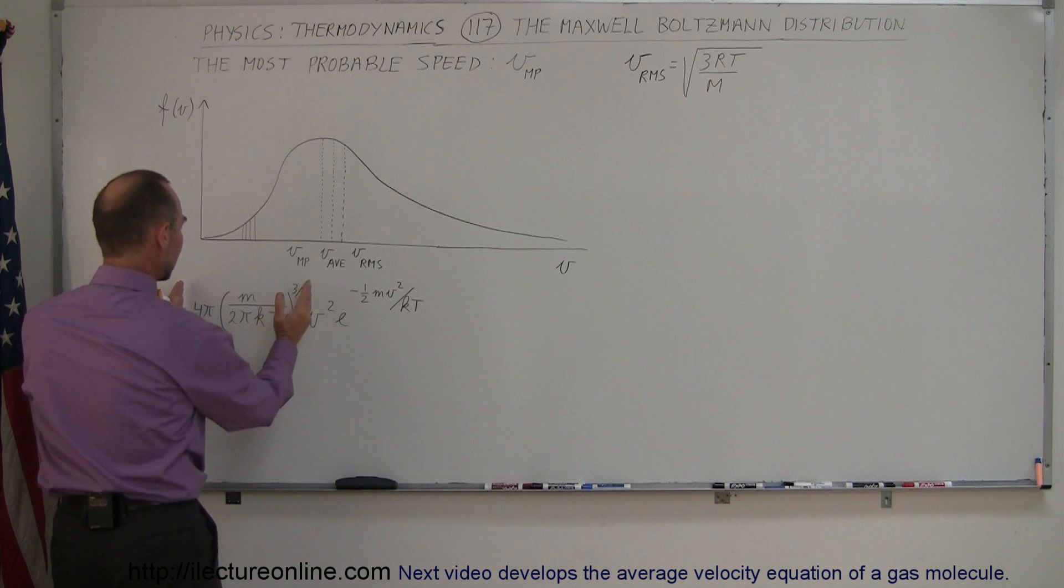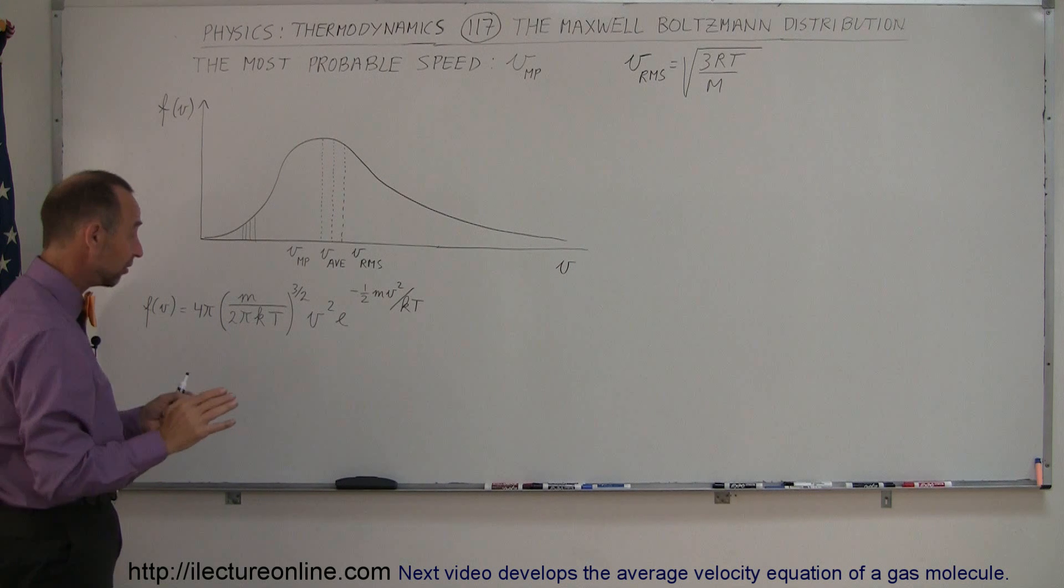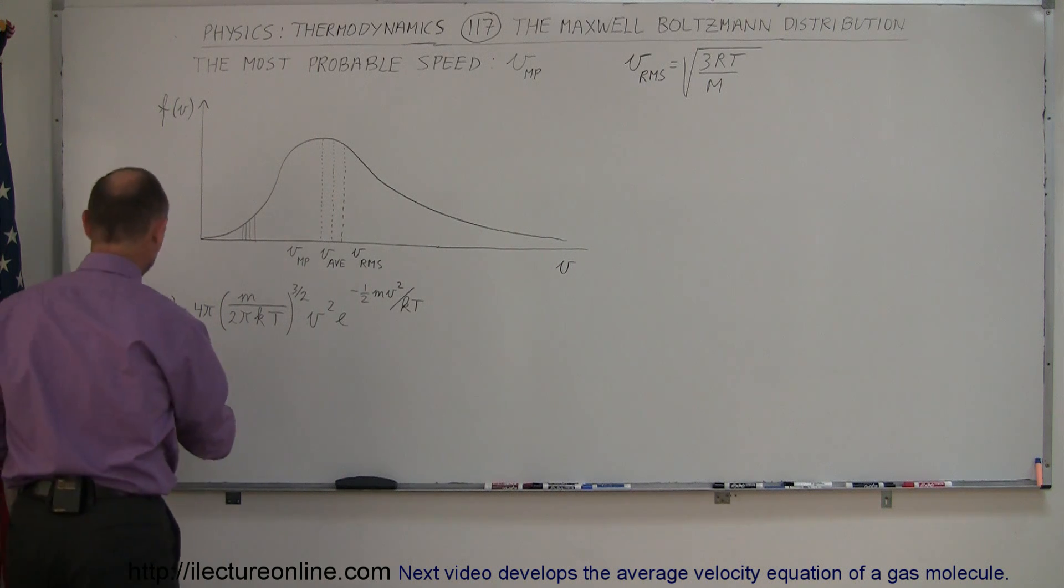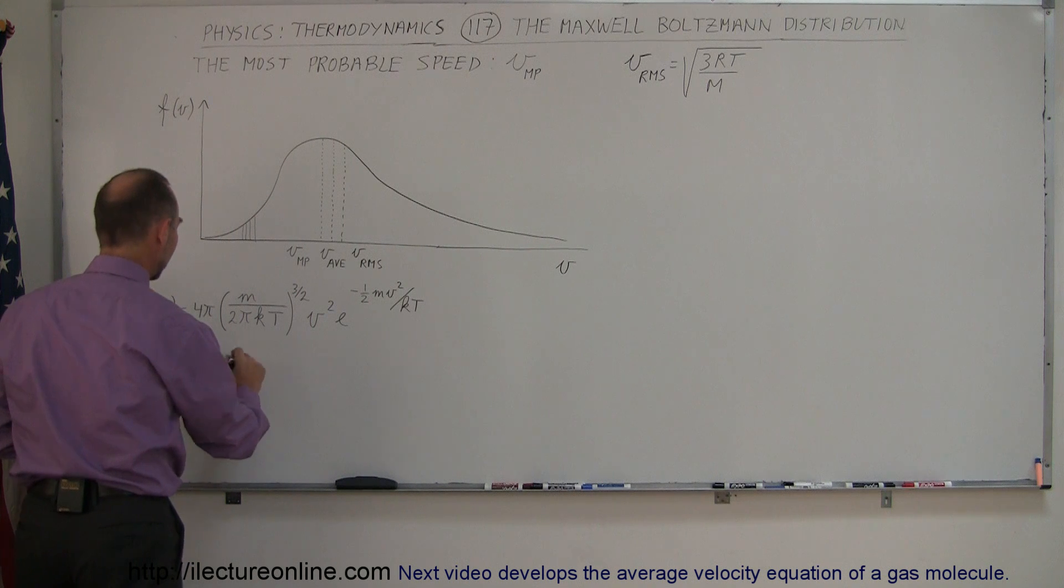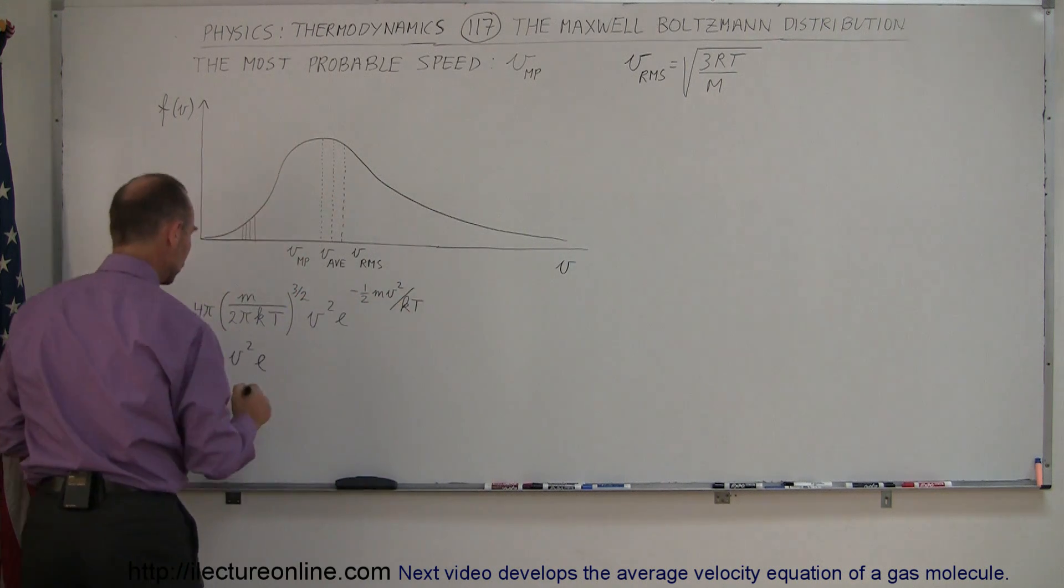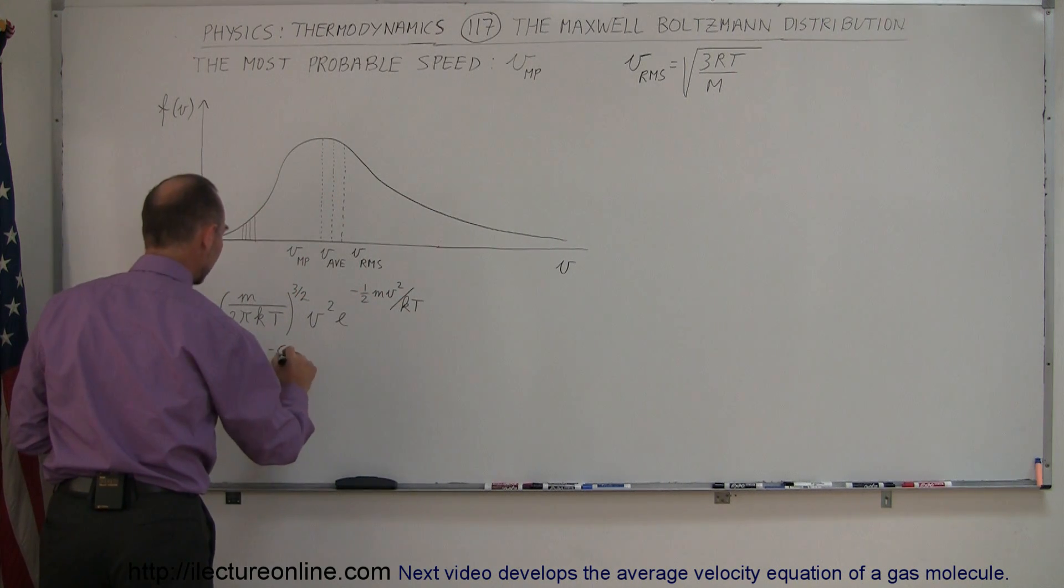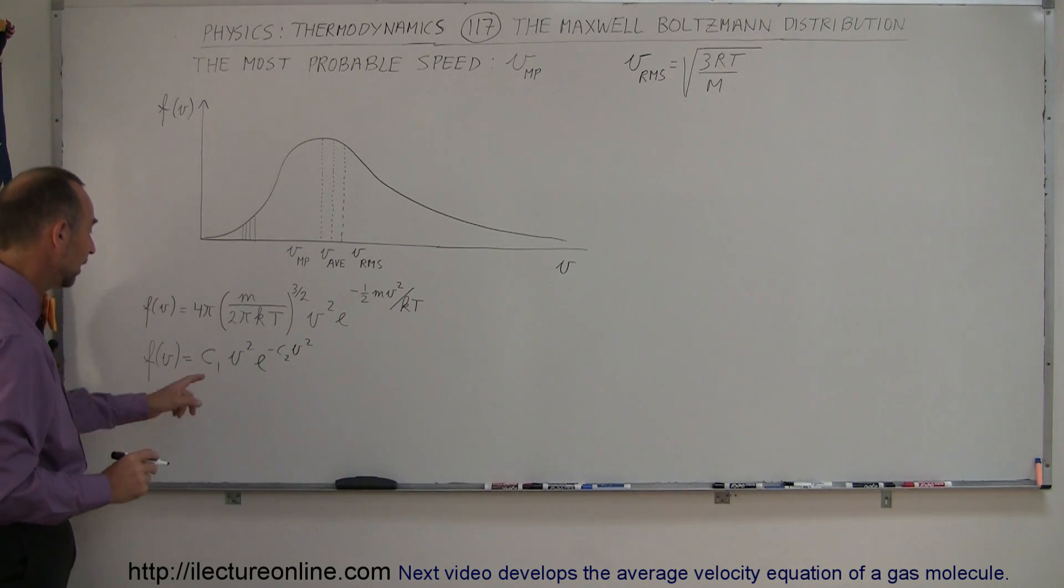But we're going to take this quantity right here and call that a constant, because everything inside here, if we assume the temperature would be constant, is a constant. So we can write this as the function, or the function as a function of velocity, is equal to, call that c1, so this whole thing becomes c1, times v squared, times e, and then we're going to call 1 half m divided by kt a constant 2. So it's minus constant 2 times v squared. And now we have a much simpler equation that only has v squared twice like that.